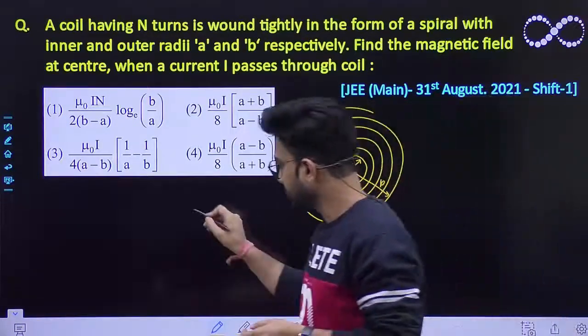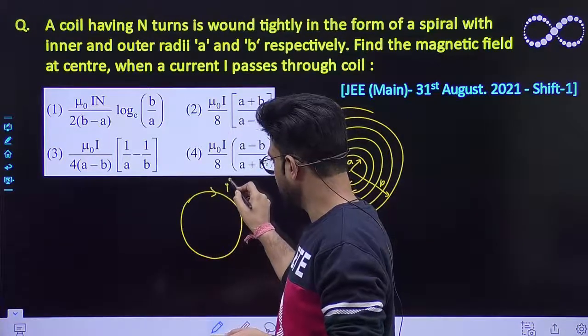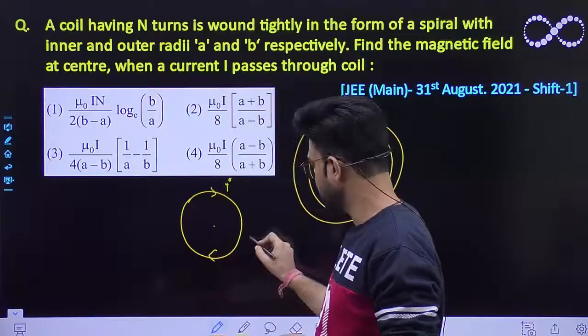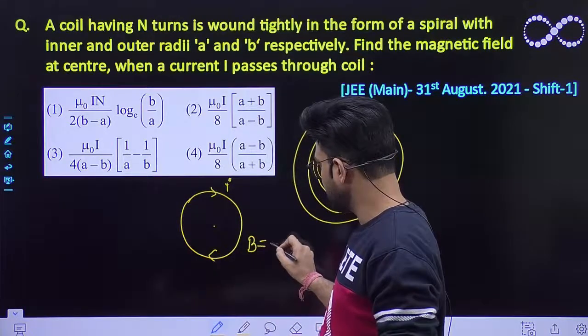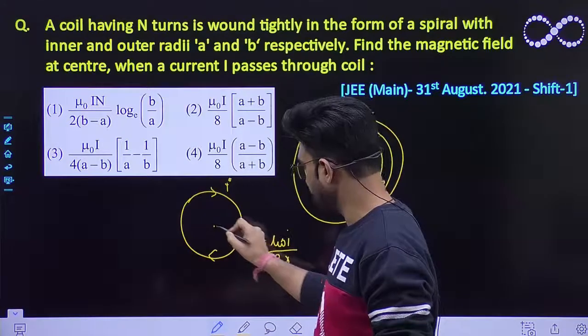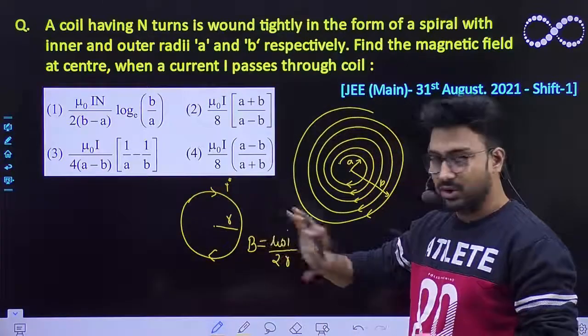We also know that magnetic field because of a circular coil which is having current I, at its center is given by the relationship B equals μ₀I/(2R), where R is the radius of this coil. This thing we already know.